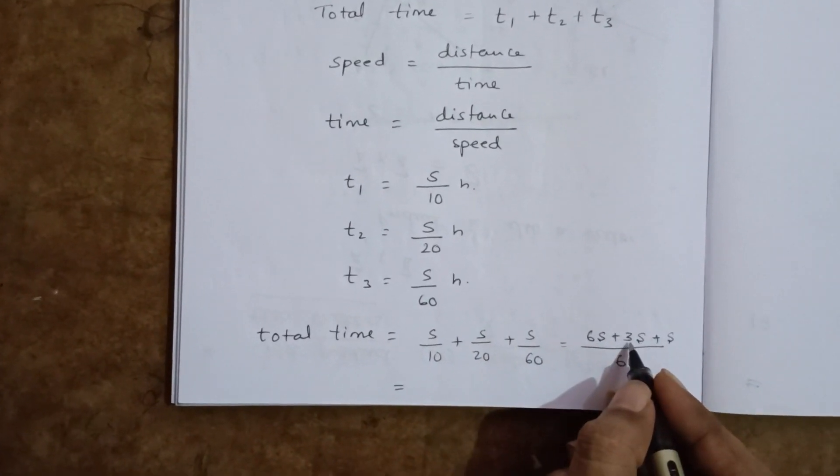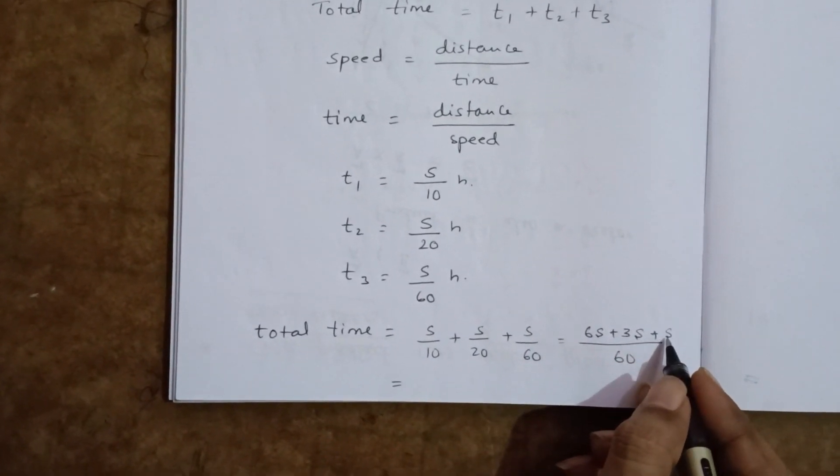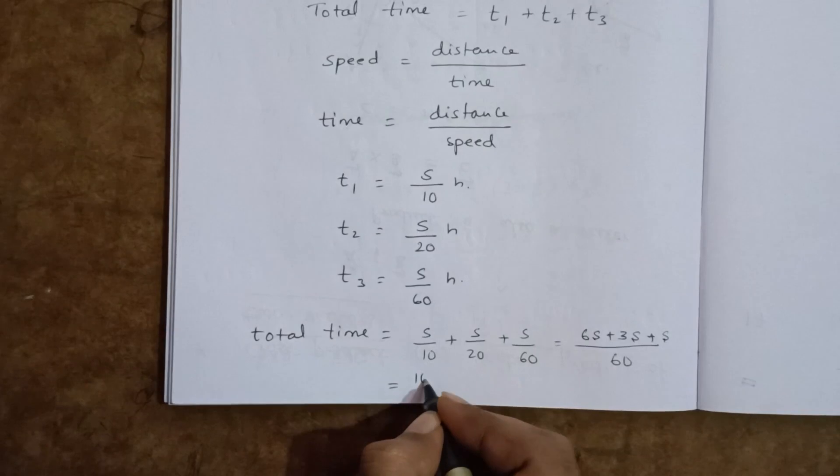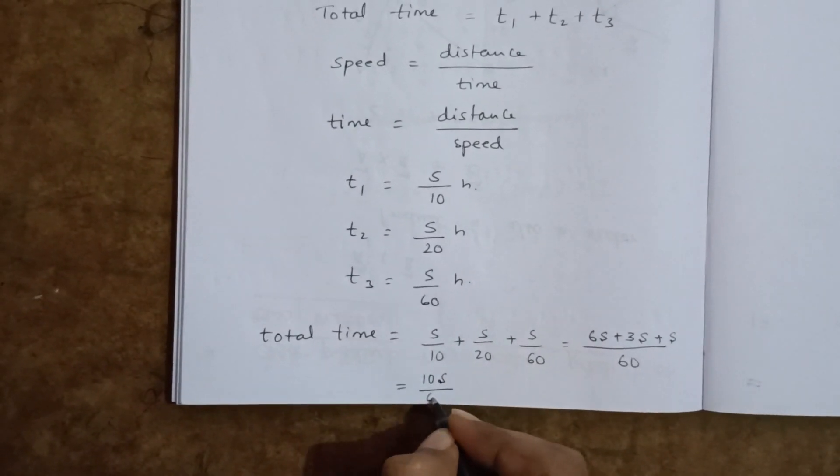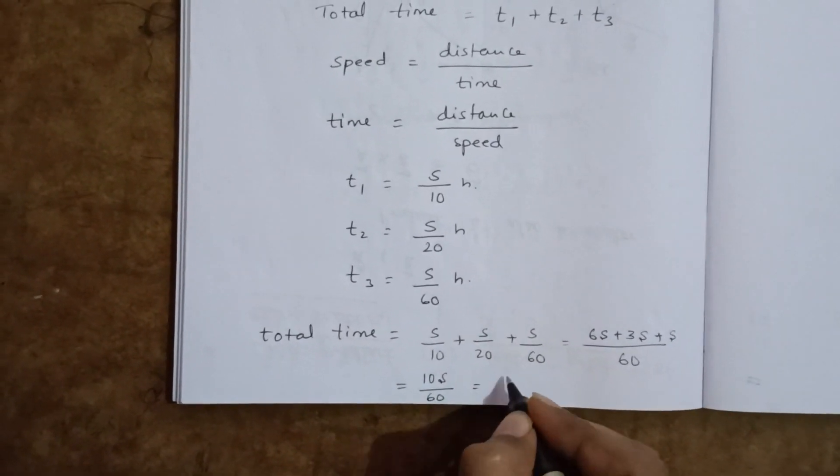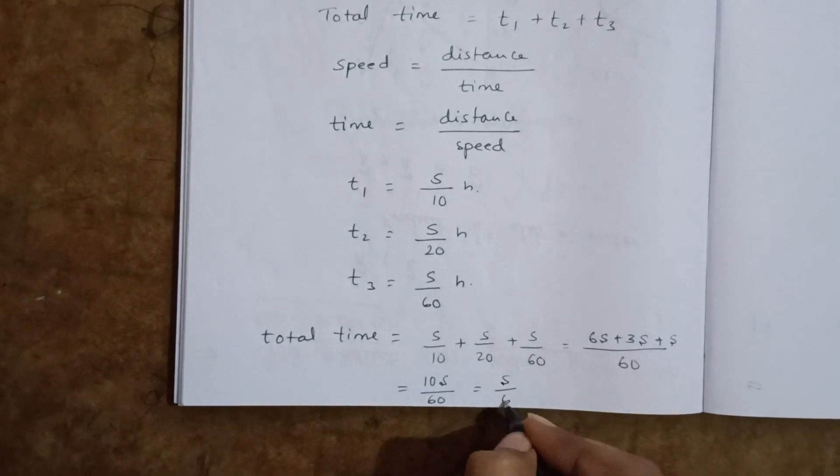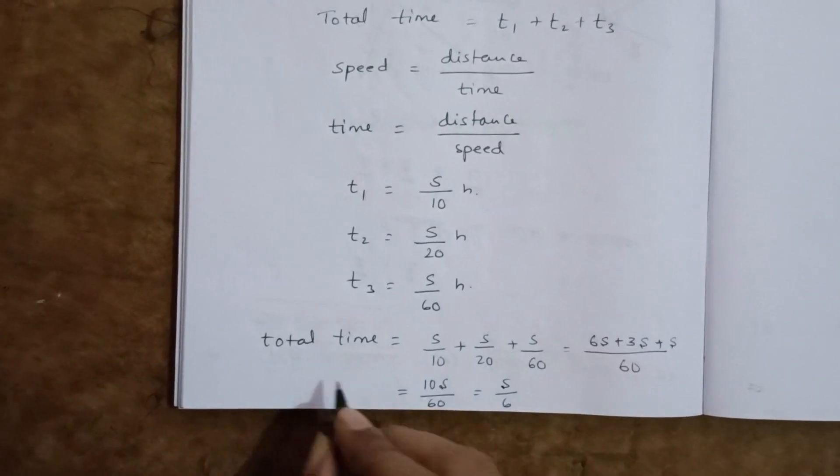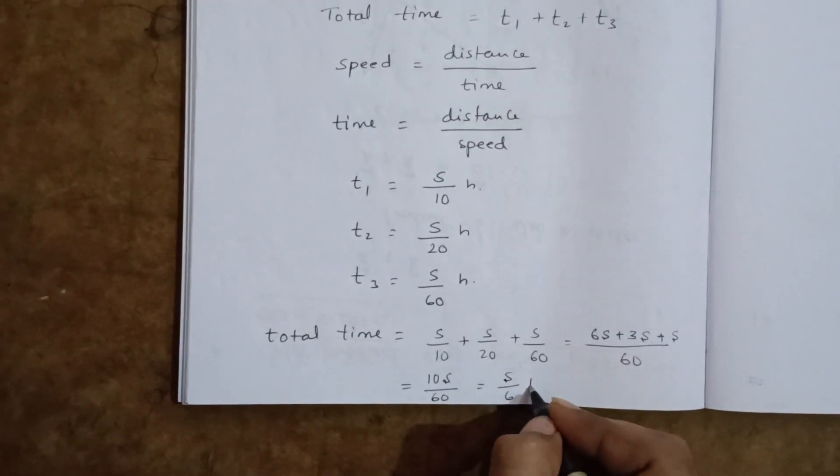6 plus 3 is 9, plus 1 is 10. So 10s divided by 60, which simplifies to s by 6. Total time is s by 6 hours.